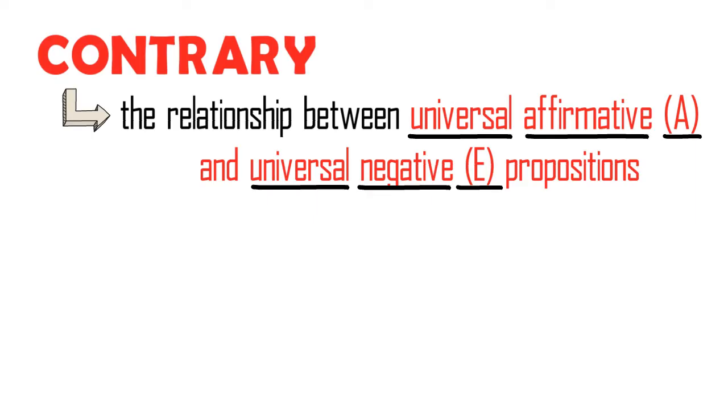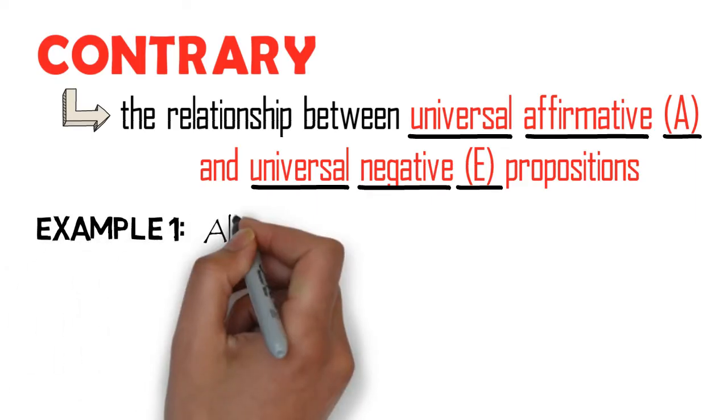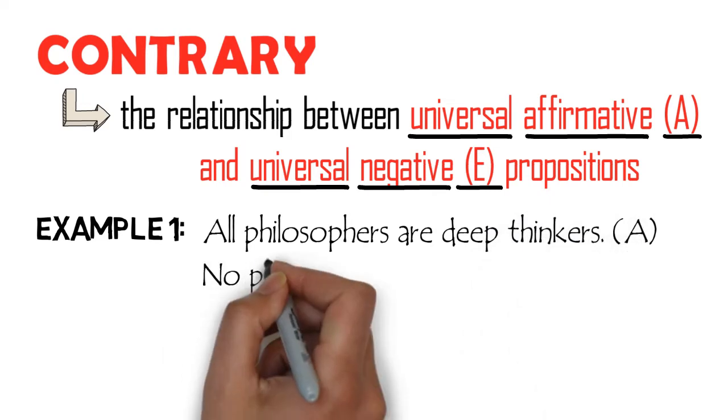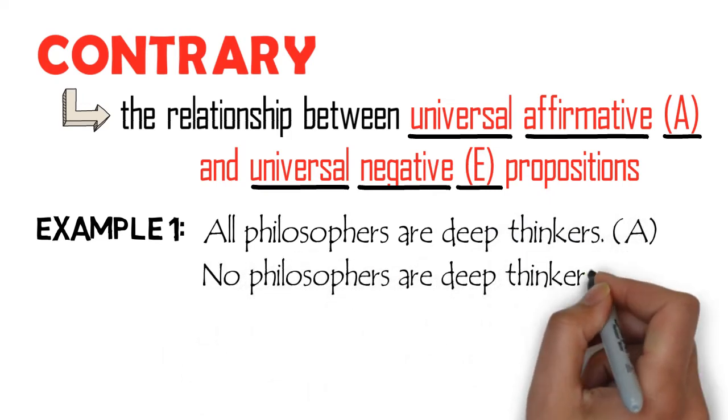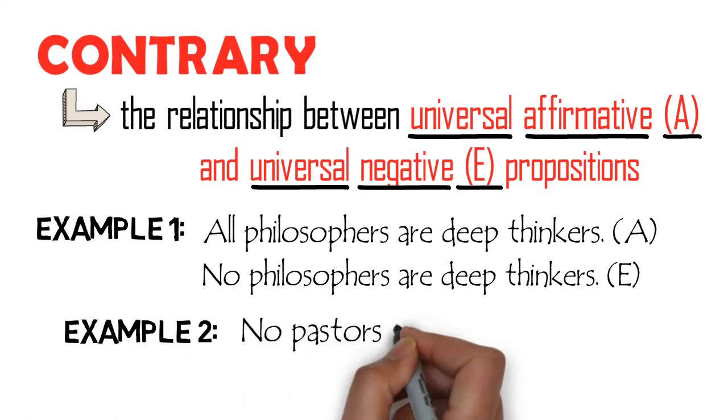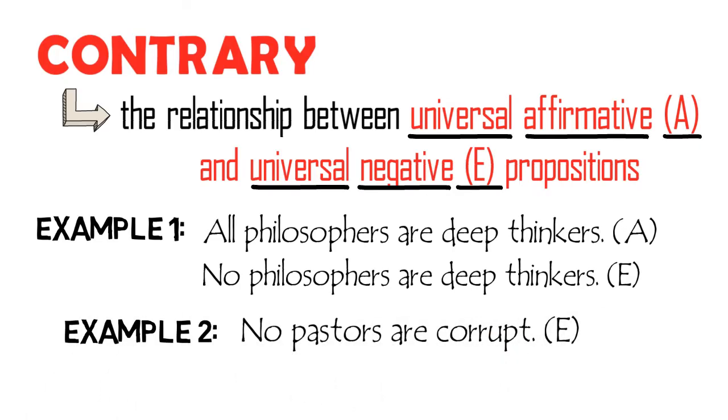Let's consider the following examples. All philosophers are deep thinkers. No philosophers are deep thinkers. No pastors are corrupt. All pastors are corrupt.